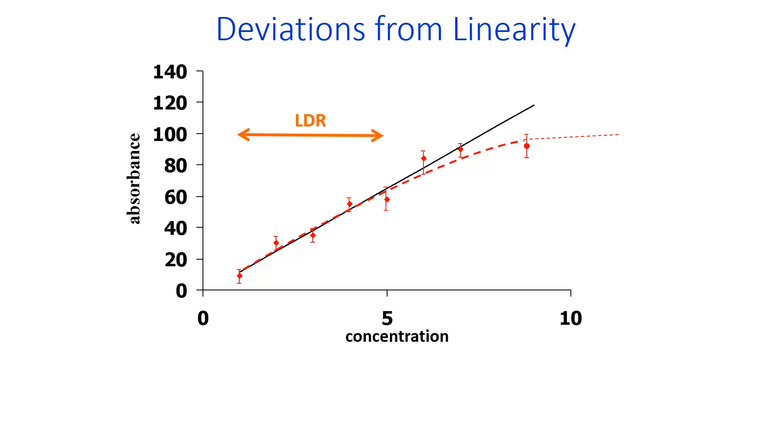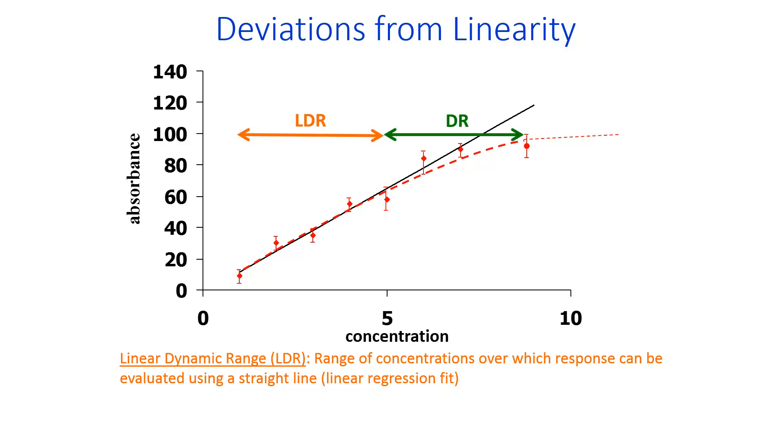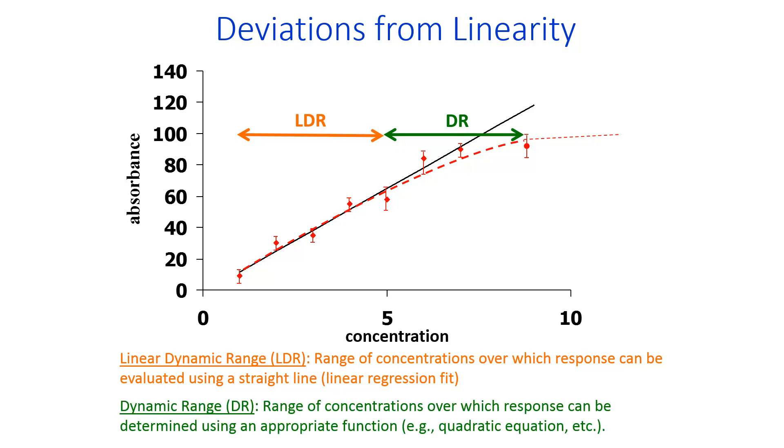The range over which the linear model works is called the linear dynamic range. And so in this case, it's very straightforward. You just use y equals mx plus b. Where the concentration is still increasing but not linearly, we just call this the dynamic range. So in this range, you could potentially fit some sort of other equation, a polynomial or whatever, to still be able to predict, with slightly less certainty, what the concentration of your unknown is going to be.